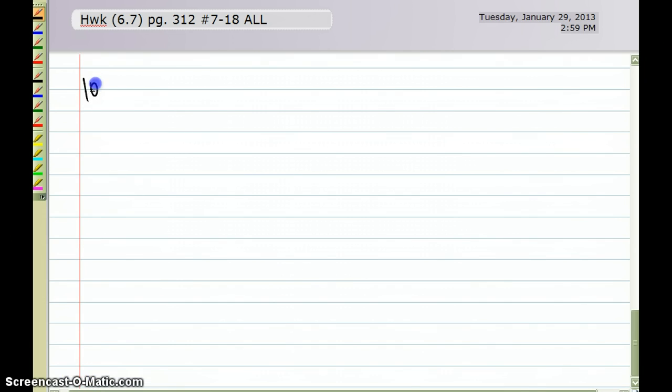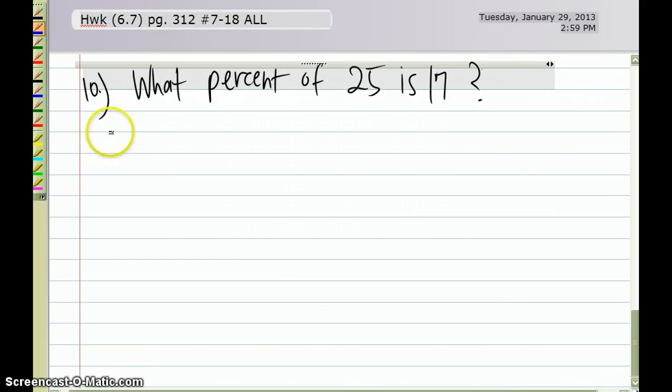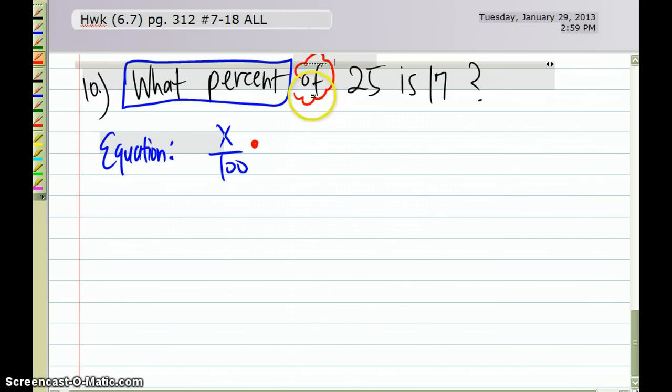Okay, now we're going to do number 10. So 'what percent of 25 is 17.' And then if I write an equation for that question here, I'm going to take each part. 'What' and then 'percent.' So I'm looking for percent. According to the math code, that represents x over 100. Then my 'of' is my multiplication symbol, and I have of 25, so I'm going to multiply 25. And then my 'is' represents my equal sign, is 17, so equals 17.